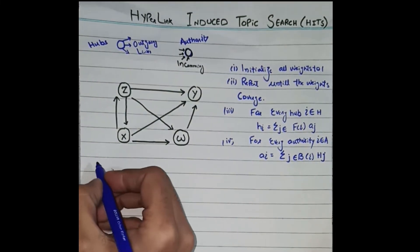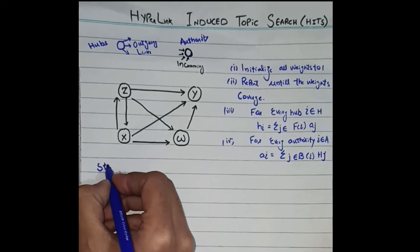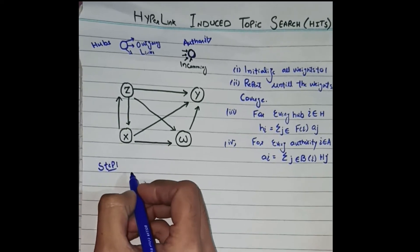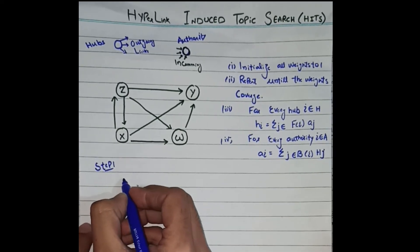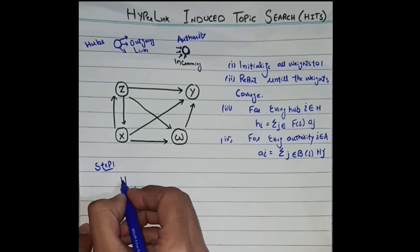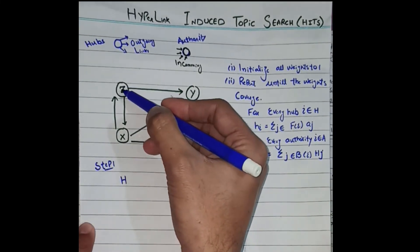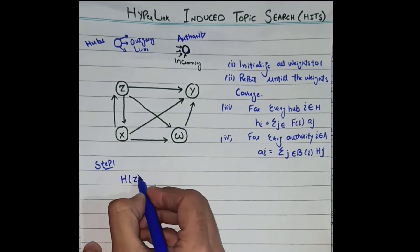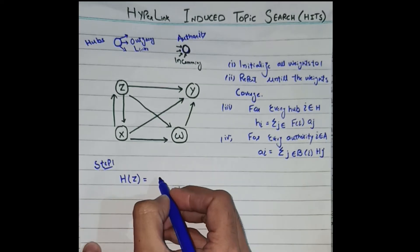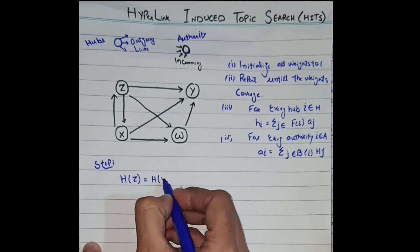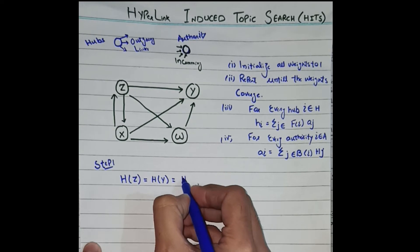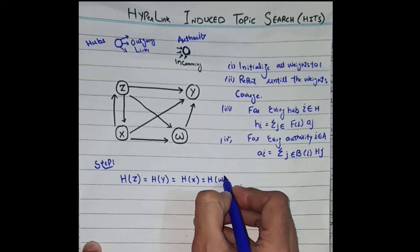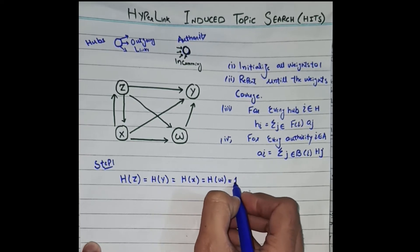Step one: initialize all weights to one. We initialize the hub values for all nodes — hub of Z, hub of Y, hub of W, and hub of X — all equal to one.